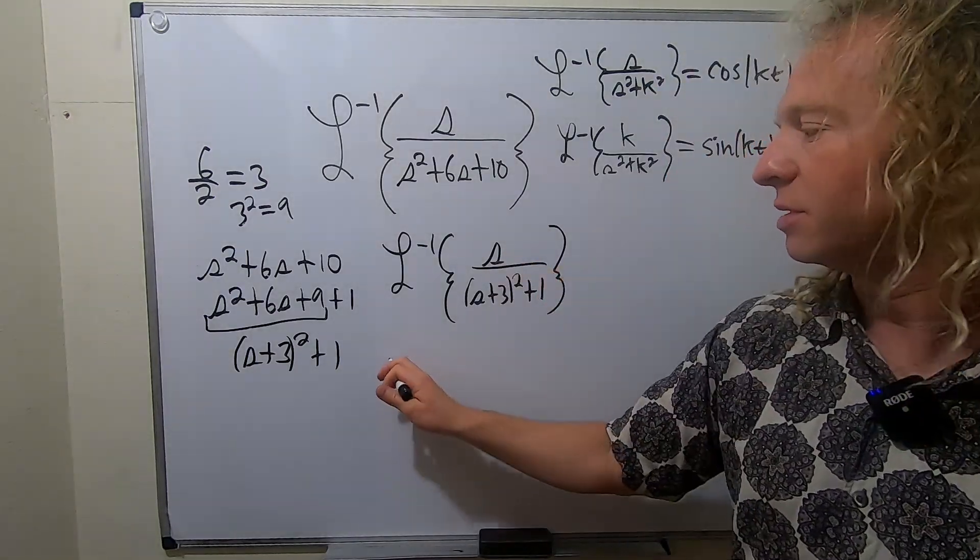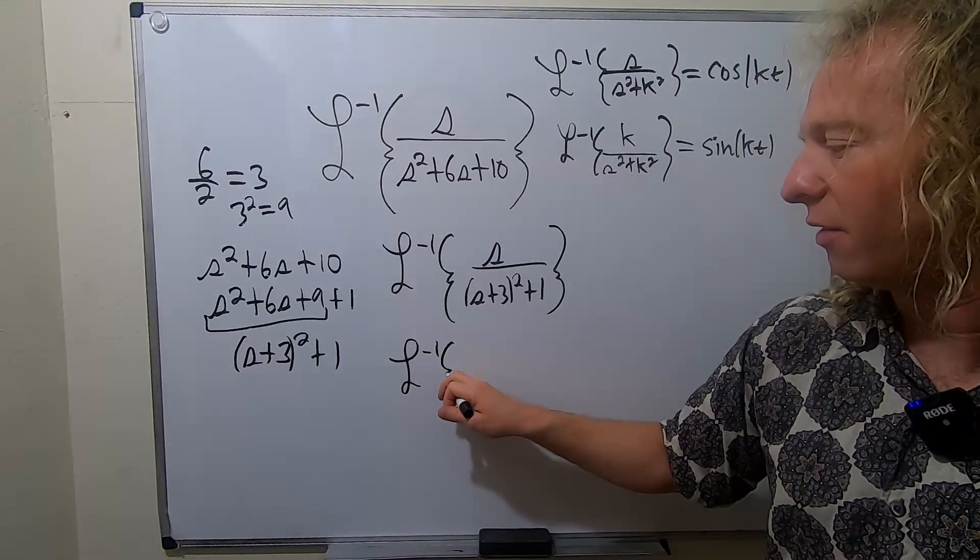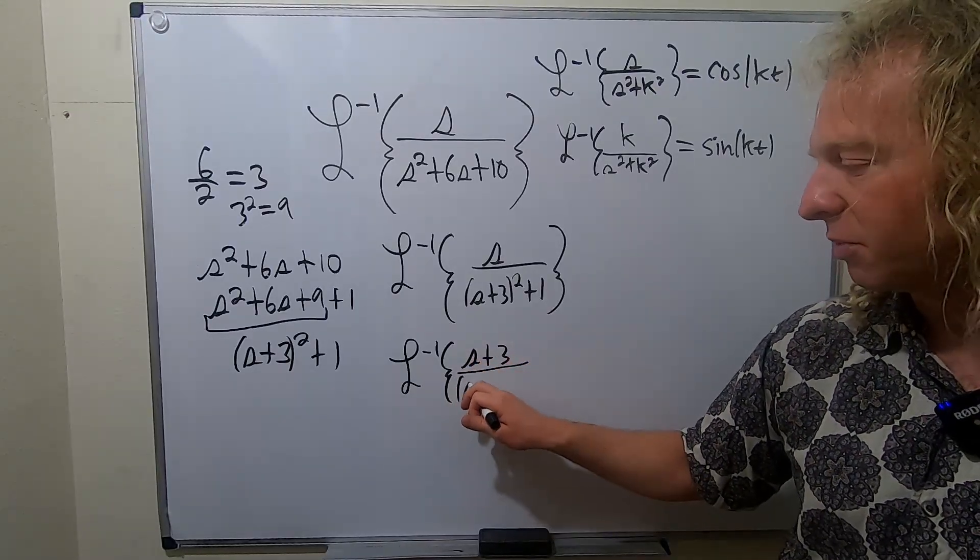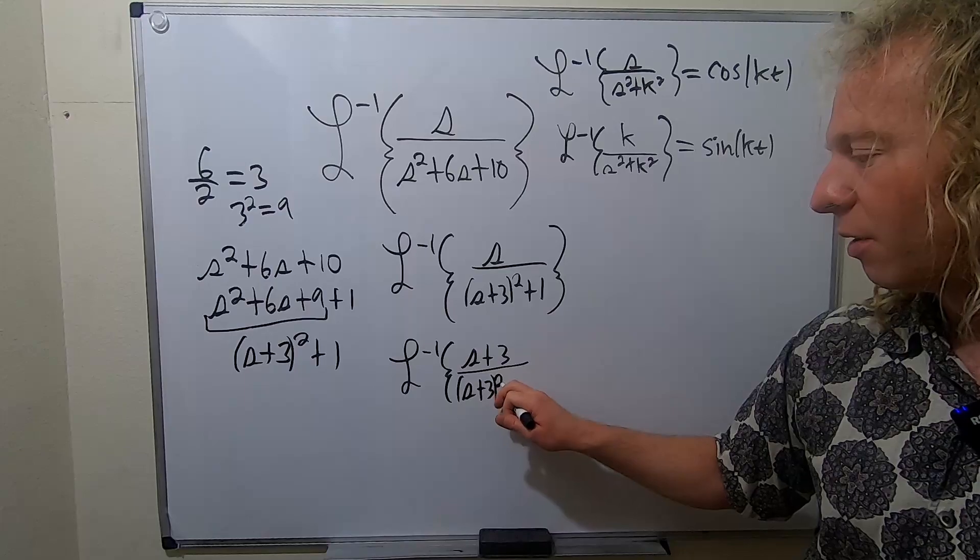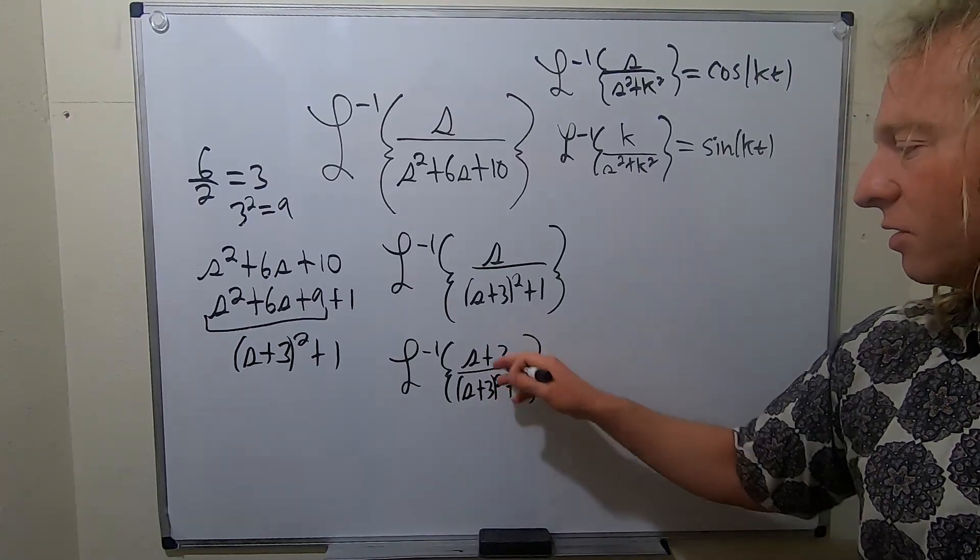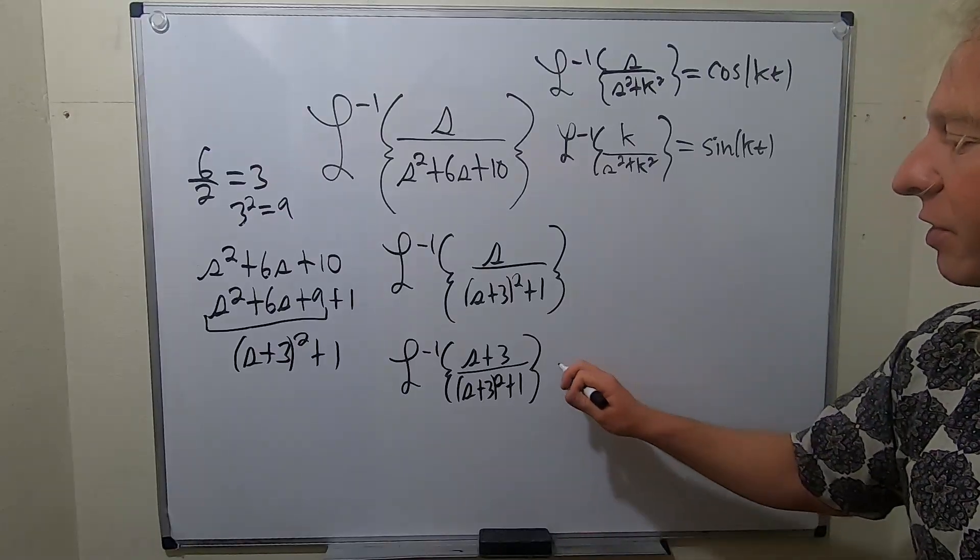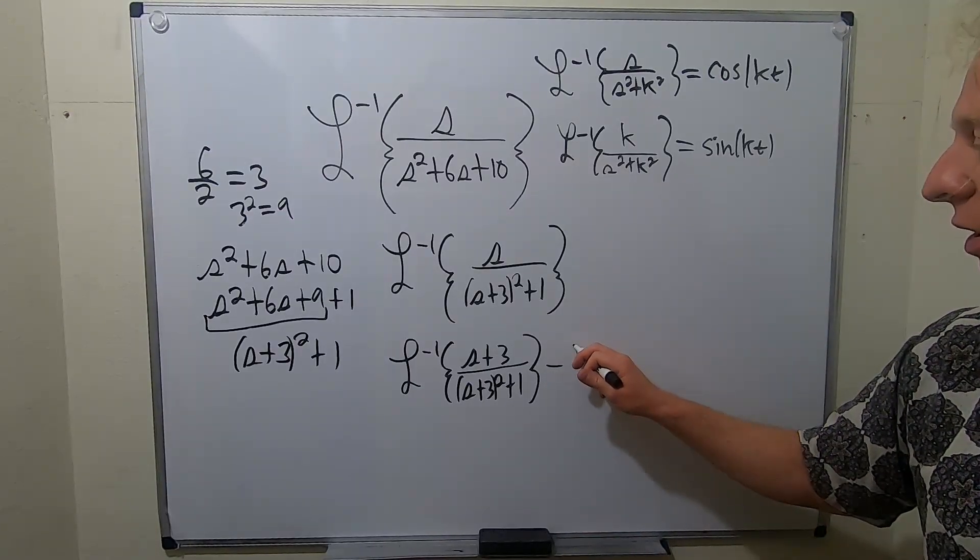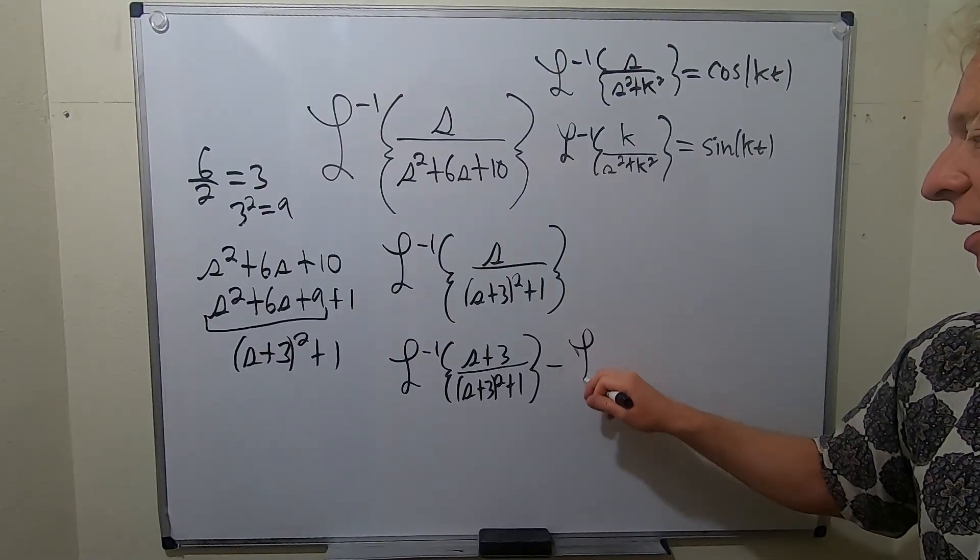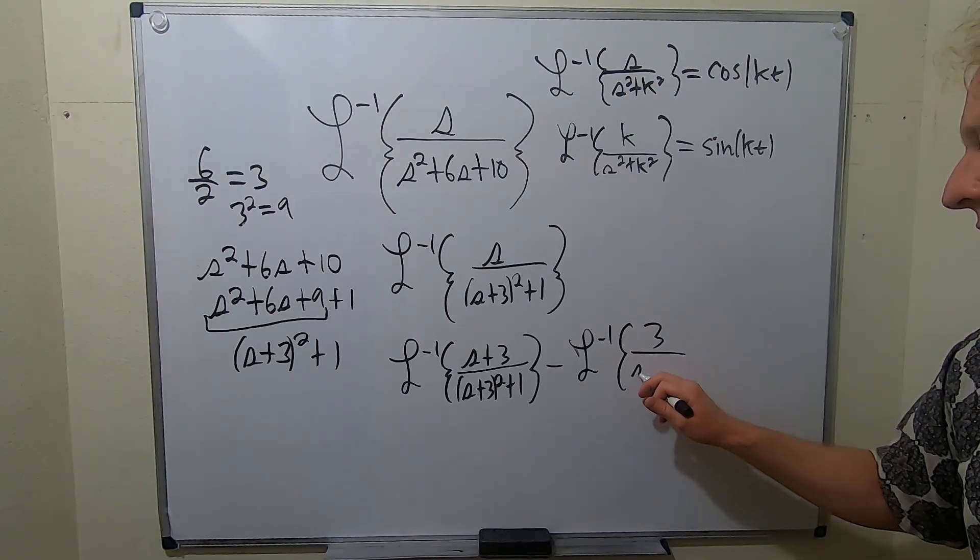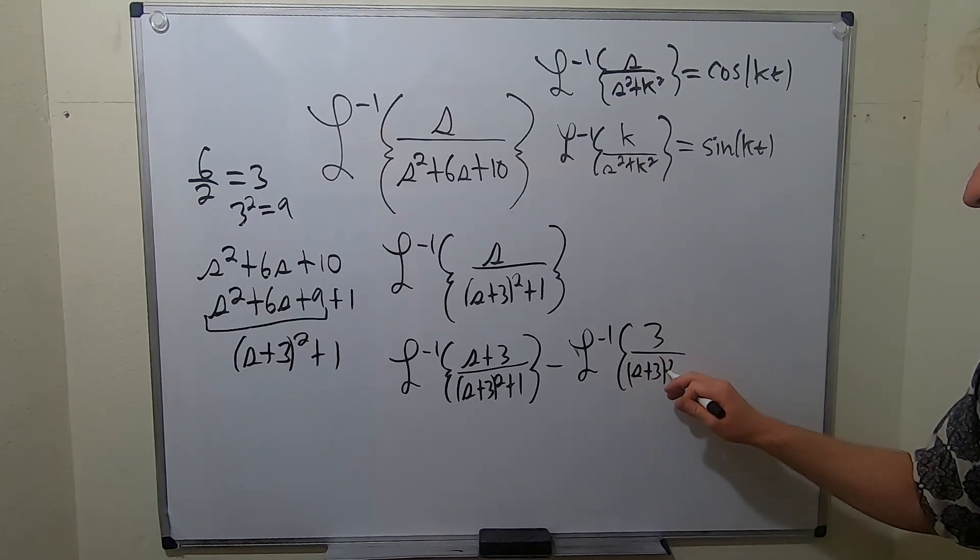Okay, so we're going to add a 3 and subtract it. So this is the inverse Laplace of, so s plus 3 over, and then s plus 3 squared plus 1. So we can't just put a 3 there, right? That's wrong. So we got to take it away. So this is minus, I'll put it on the inside, inverse Laplace, 3 over, and then we have s plus 3 squared plus 1.